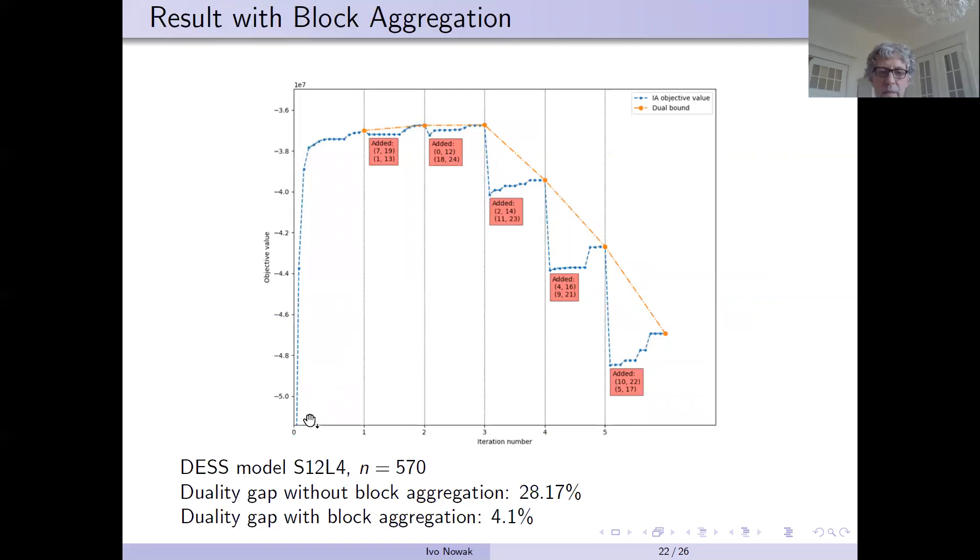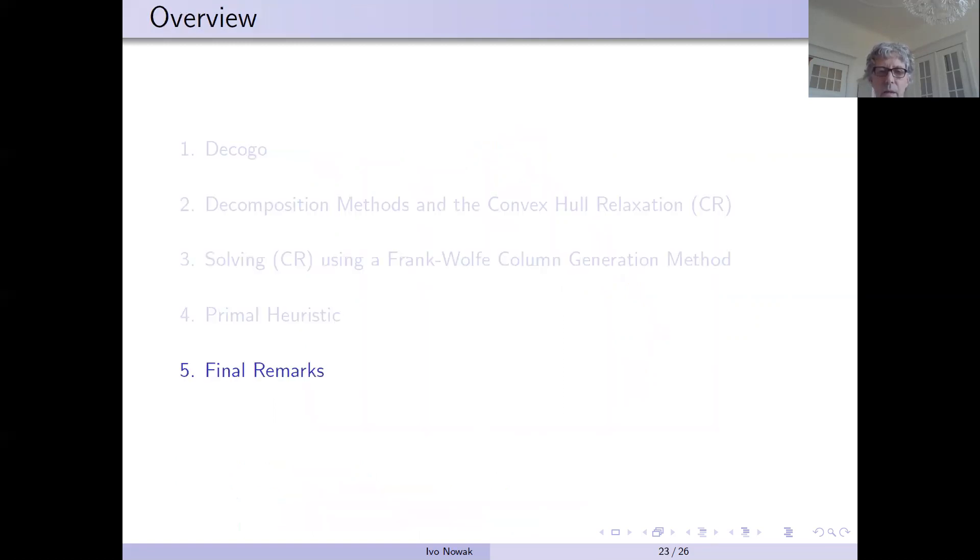And Ouyang then made this very nice experiment for this problem with 500 variables. And what you can see is that in the beginning, here we are computing the convex relaxation. And then after five iterations with a new method, the relative gap was reduced from 28% to 4%. So this was a great reduction.